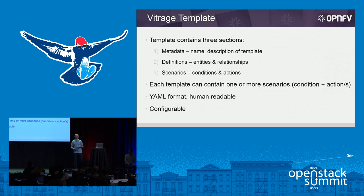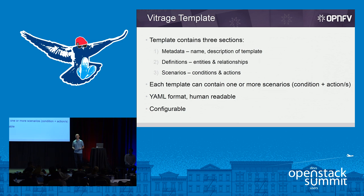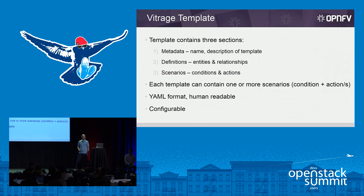I want to get into the Vitrage business logic and the Vitrage template. A template contains three sections. The first section is metadata — the name and description of the template. The second section is definitions: which entities are part of this template and what are the relationships between those entities. The main part of the template is the scenario, which defines the conditions and actions we want to take. It's written in YAML format — very human readable and very easy to edit or add more templates.